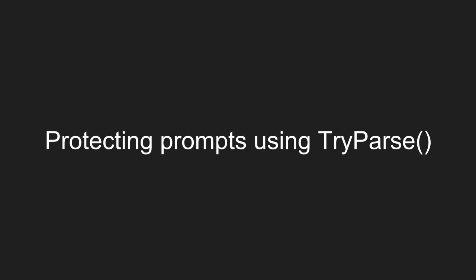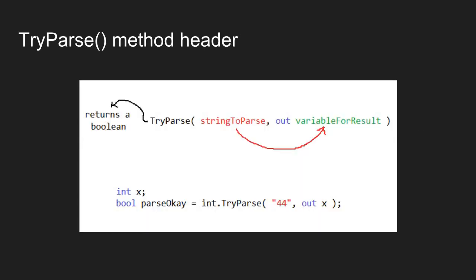In this video we're going to look at how we can protect our prompts using the TryParse method. The TryParse method takes two input values to do its job: a string value of some number that we want to parse, and then the variable we want to store the result in, which we pass inside the parentheses. This is an output reference parameter, and we will talk about the out keyword in a future video.